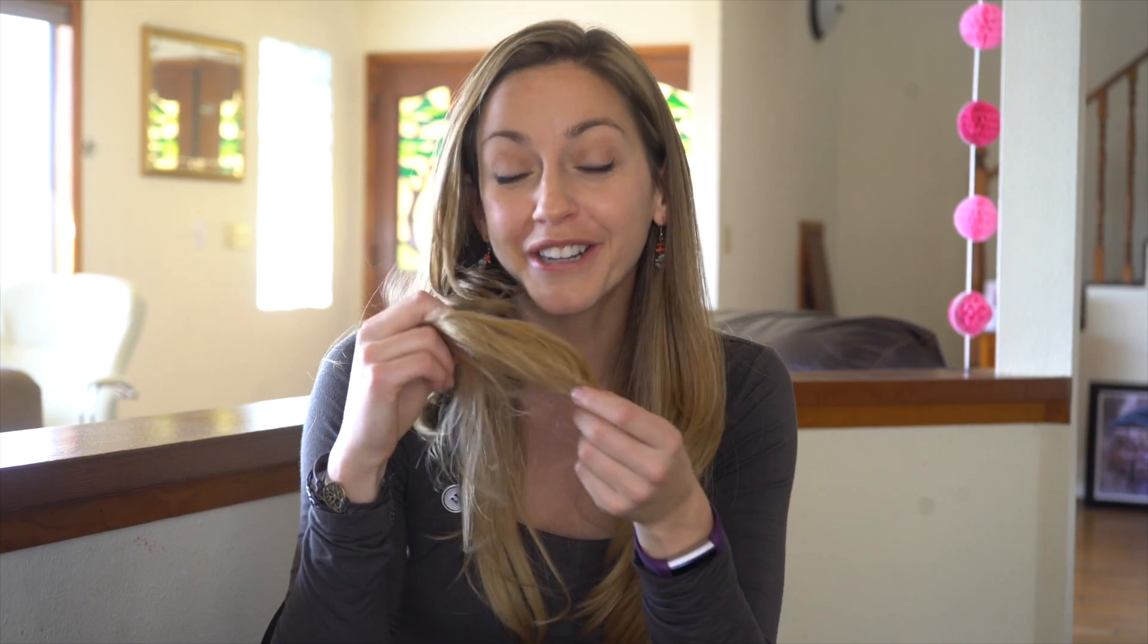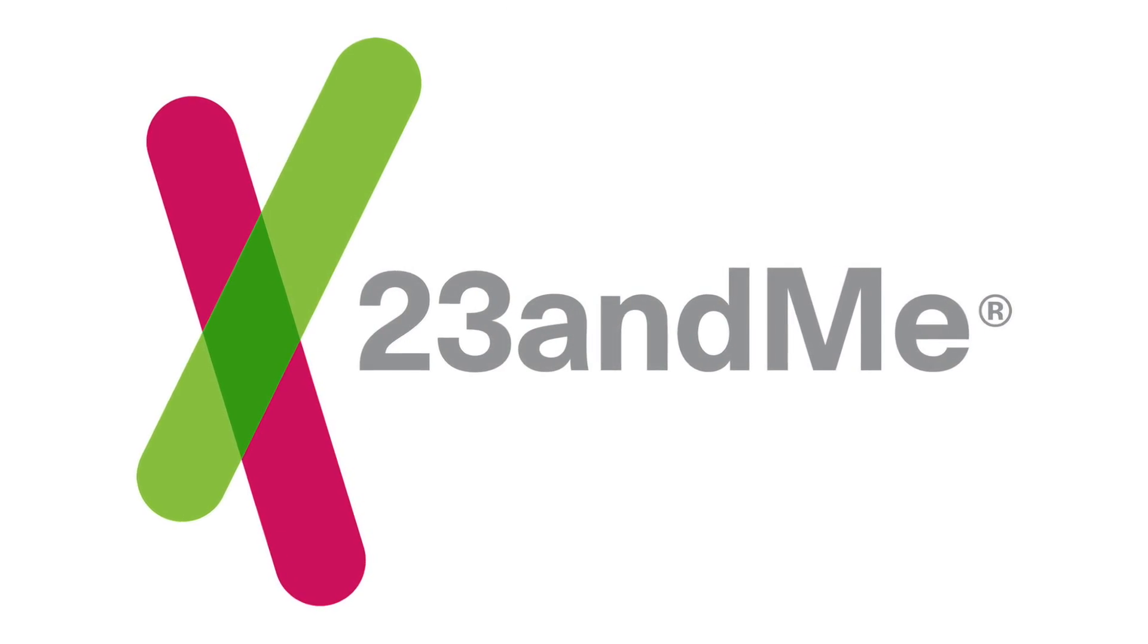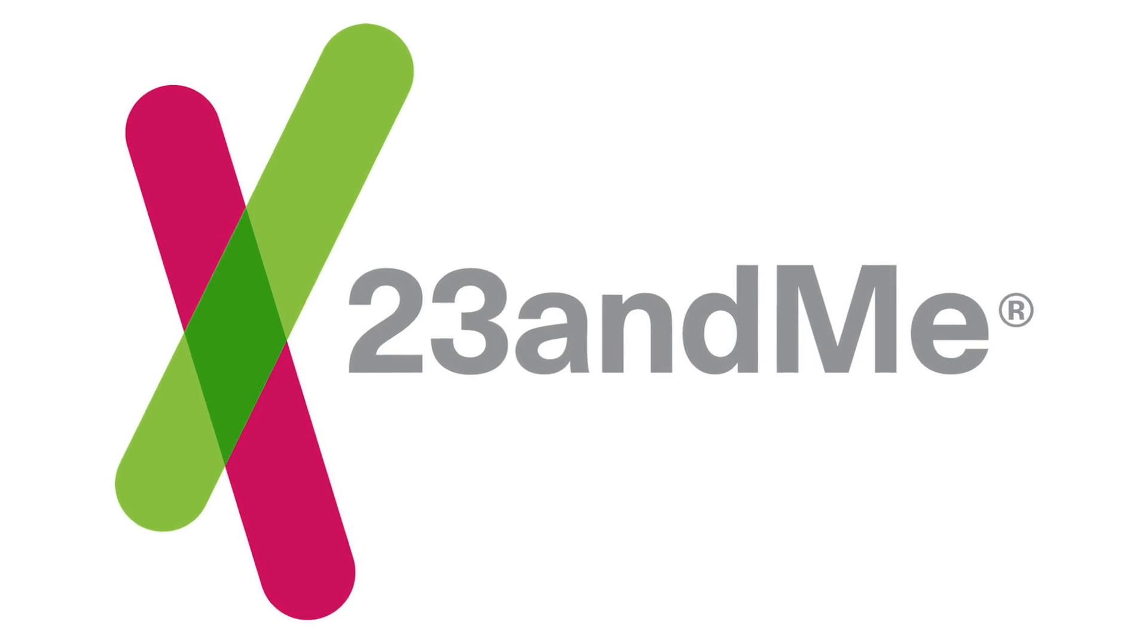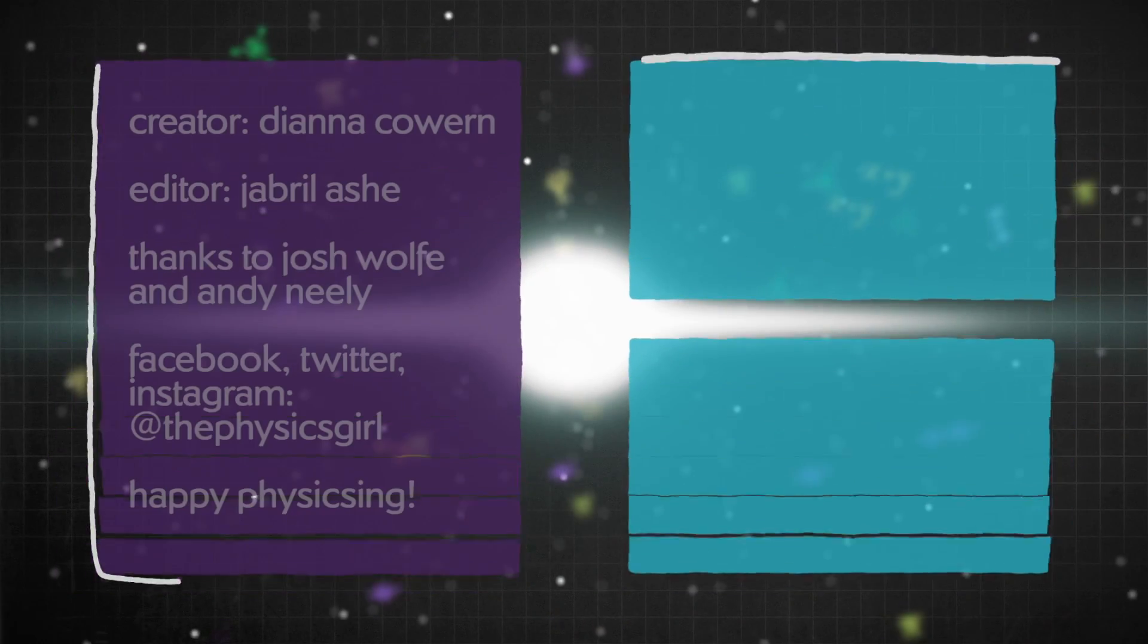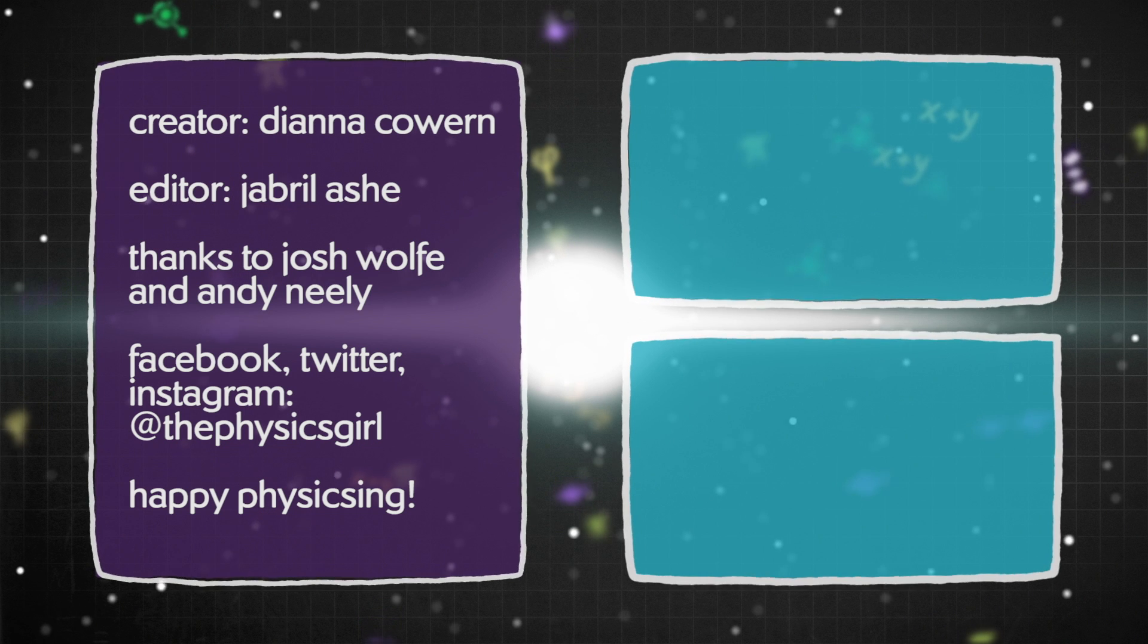Thanks to 23andMe for sponsoring this episode. 23andMe DNA analysis was created to help people understand their DNA. You'll be able to see what regions of the world your ancestors came from and learn how your DNA influences your facial features, your hair color, your sleep patterns, even your taste preferences. Like, why I can't get enough cheesecake in my life. The name 23andMe comes from the fact that human DNA is organized into 23 pairs of chromosomes. Head over to 23andMe.com slash physicsgirl to learn more about their DNA analysis kit. All right.